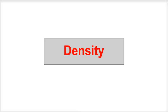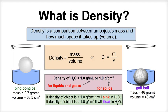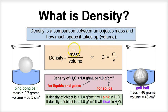Hey you guys, this is Mr. Millings and today we're going to learn about density. So what is density? Density is a comparison between an object's mass and how much space it will take up, or its volume. So density is a relationship between two things: an object's mass and its volume.